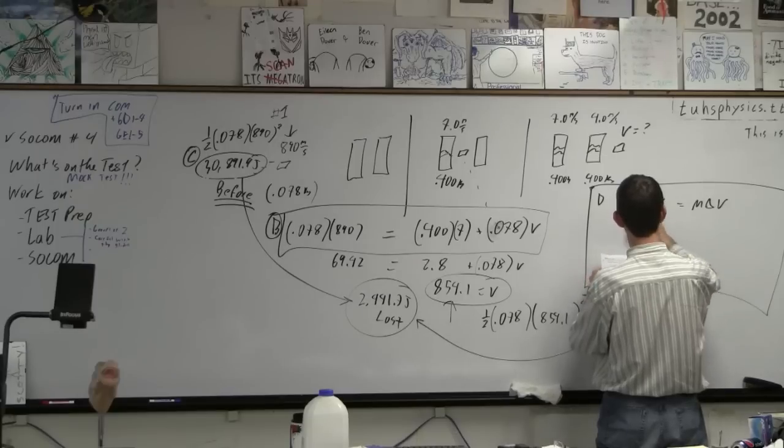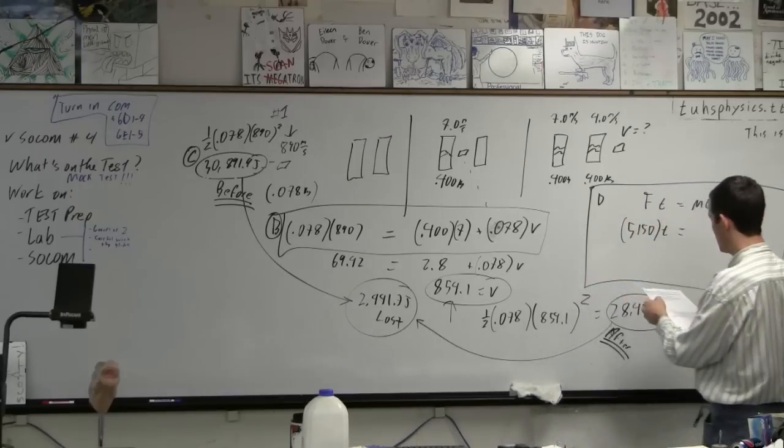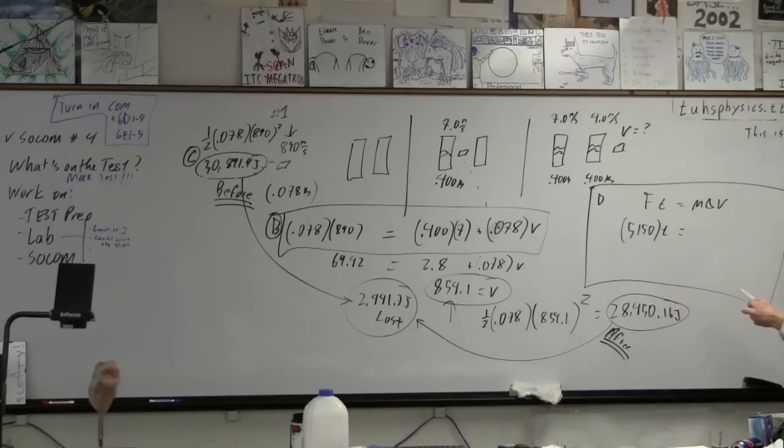All right, so the force is 5,150. The time is what we're trying to find. And then what are we talking about here, the bullet or the block? Go through it. On the first, I think it's the force on the block, isn't it? Doesn't it say that? It's the force on the block.